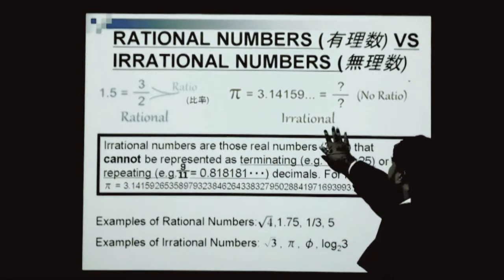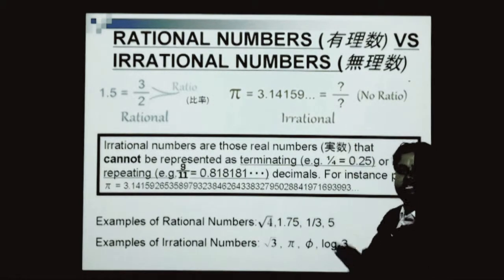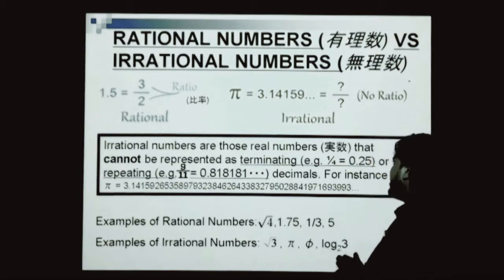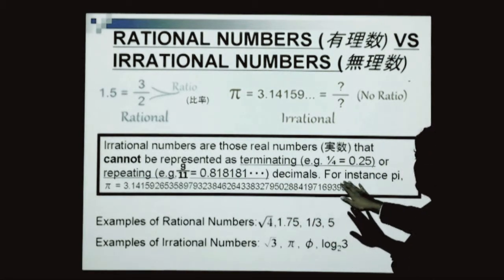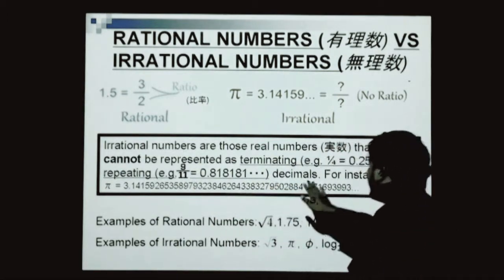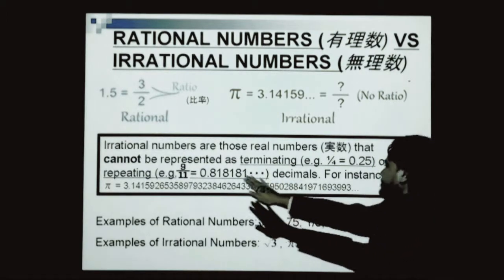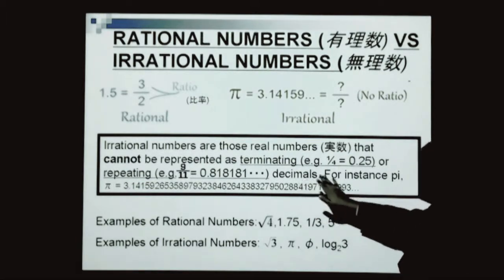An irrational number is a number that cannot be put into a simple fraction form. Therefore, it cannot be a ratio. Irrational numbers are those real numbers that cannot be represented as terminating or repeating decimals.